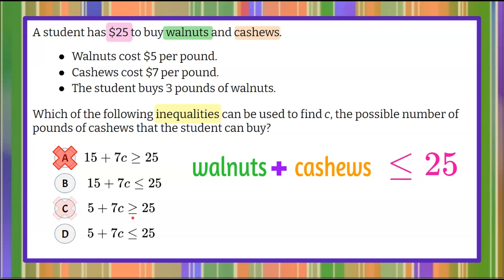And then we can also eliminate answer choice C because that is also greater than or equal to $25. So just looking at this first sentence and writing something visual to look at, we can eliminate two answer choices.